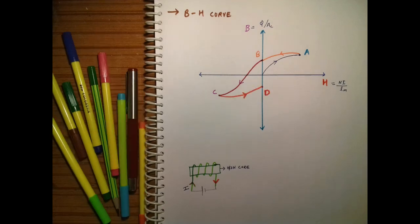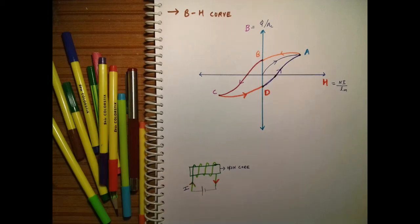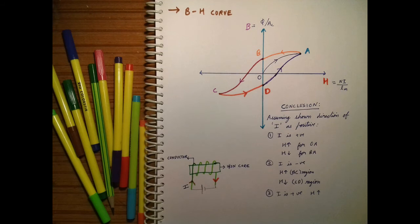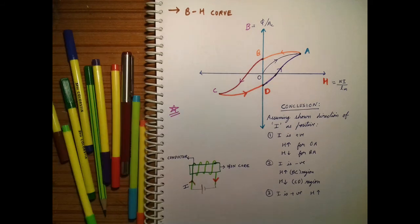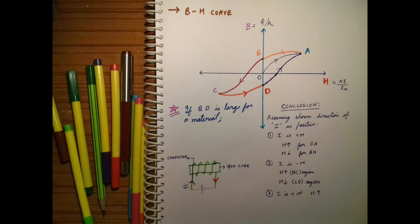At C it is again the saturation point — the core is fully magnetized. Now again we decrease the current gradually to zero, and we can see that the curve goes to point D, which still has some magnetic flux density. We again reverse the polarity of the battery so the current is in the positive direction, and the curve moves from point D back to A, where it again reaches saturation.